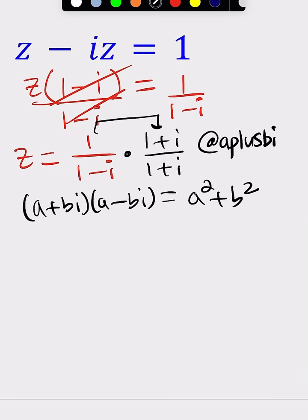But in this case, we multiply these two things and we get 1 plus i, and in the denominator, these two give us 1 plus 1, which is 2. So that's the answer.